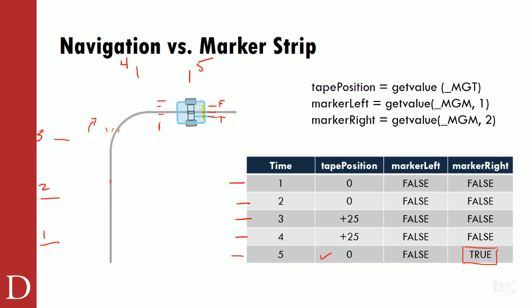When I look at the get value commands, I think of MGT as tape position. MGM is the marker command - MGM comma one is a left-hand marker, and MGM comma two is a right-hand marker. So marker left is get value underscore MGM comma one, and marker right is get value underscore MGM comma two.